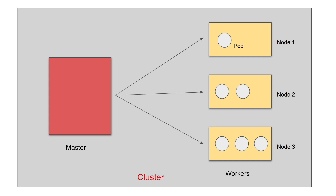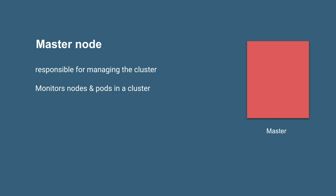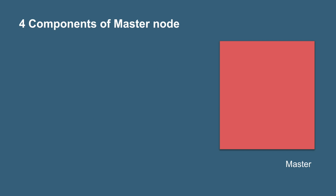We already know this diagram. In a cluster, we have master and worker nodes, and the master manages the worker nodes. In worker nodes, we have pods and pods have containers. The master node in a Kubernetes cluster is responsible for managing the cluster. It monitors and manages the nodes and the pods. Whenever there is a failure of a node, it will move the workload of the failed node to some other working node and take care of the overall working of the Kubernetes cluster.